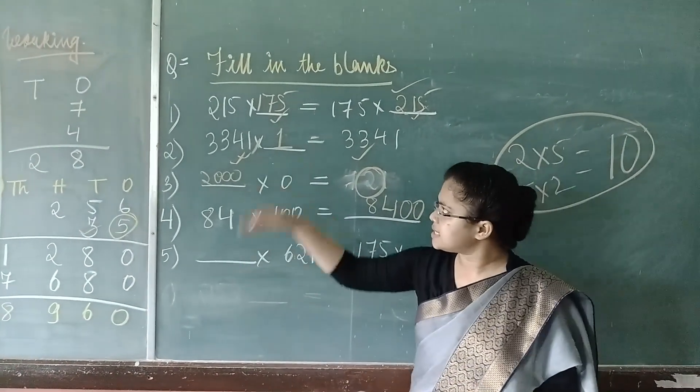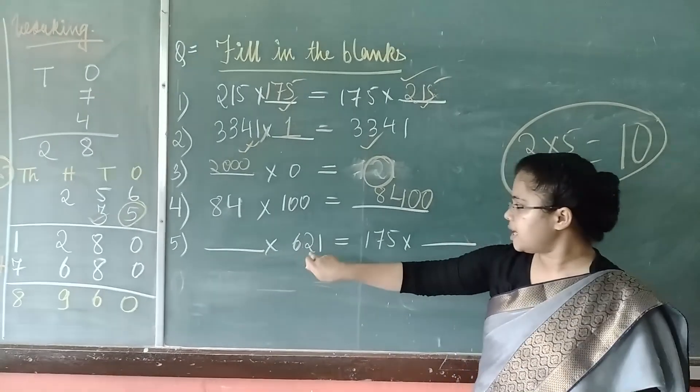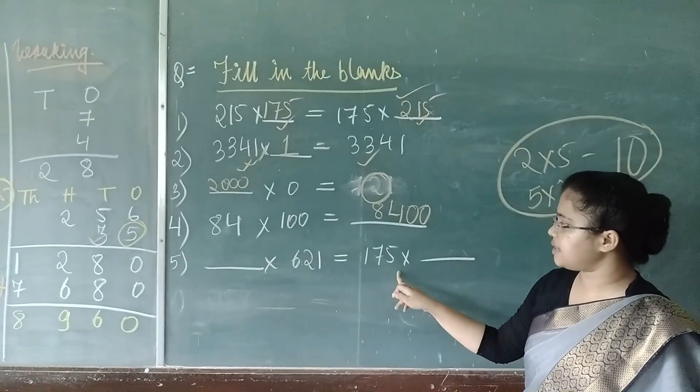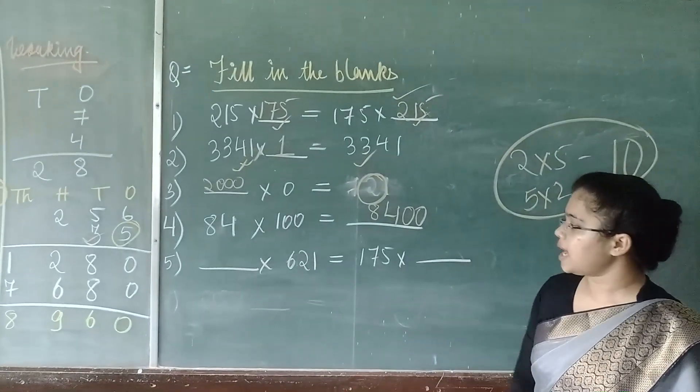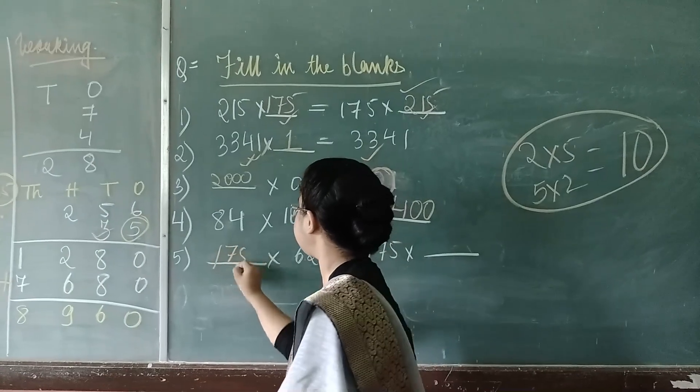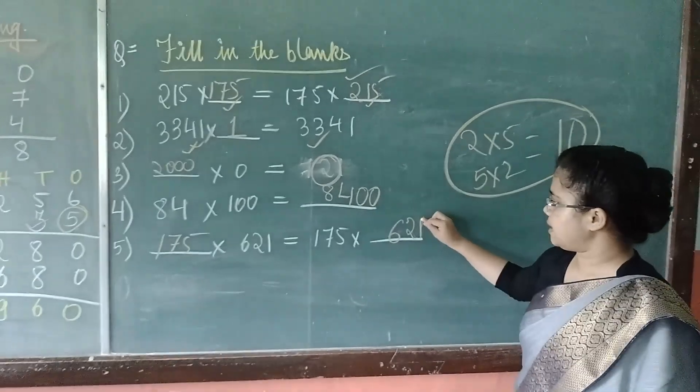Next question, the same thing that when there is a blank multiplied by 621 is equals to 175 and again, a blank is there. So, this side, 175 is missing and here 621 is missing.